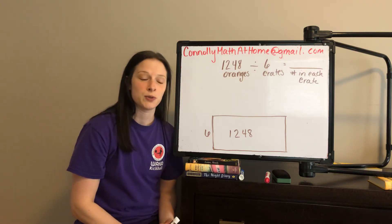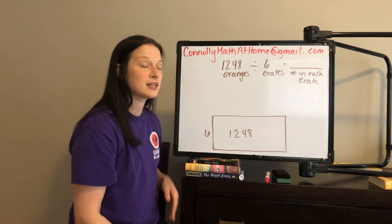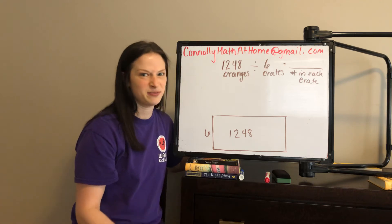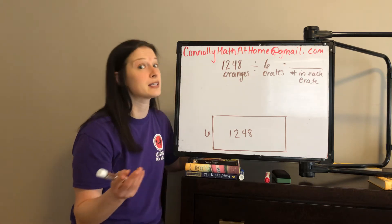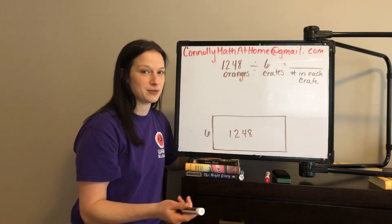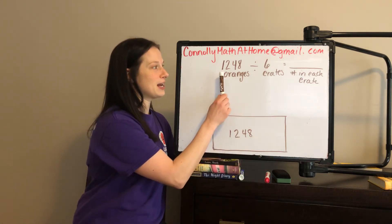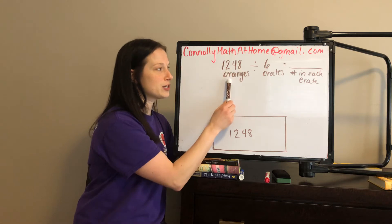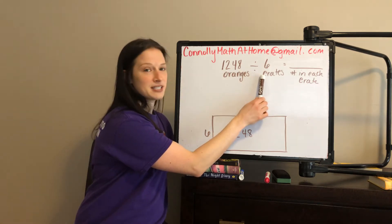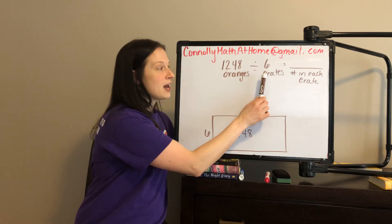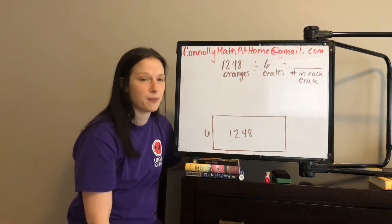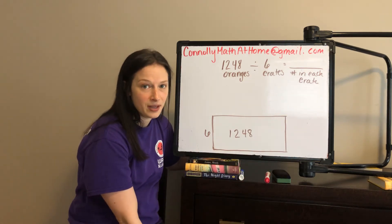We always want to give our division situation a story problem context. I do a lot of oranges and boxes — boxes of oranges and oranges into boxes — just so we can think about what's going on with something consistent. So again, we have 1,248 oranges. I want to split them into six equal crates with the same number of oranges in each crate, and my goal is to find out how many are in each crate.